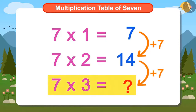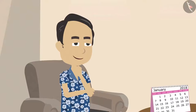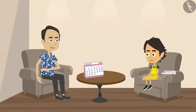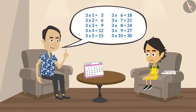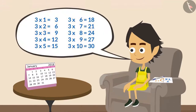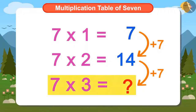So the third Sunday's date will be 7 multiplied by 3. But Ayushman does not know the multiplication table of 7, so without paper and pen he cannot answer this question. Papa understood Ayushman's problem and asked him if he knows the multiplication table of 3. Ayushman tells Papa that he knows the multiplication table of 3. Then you can easily find what 7 multiplied by 3 is.